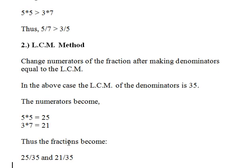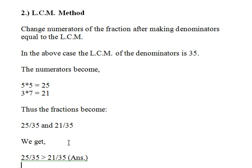Now we'll go to LCM method. In LCM method we change the numerators of the fraction after making denominators equal to the LCM. In the above case the LCM of the denominators is 35. So the numerators become 5 times 5, that is 25, and 3 times 7 equals 21. So 25/35 and 21/35.